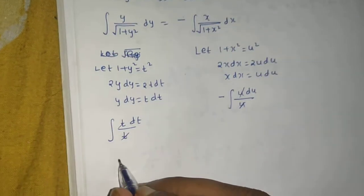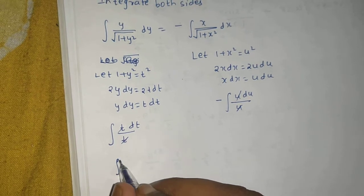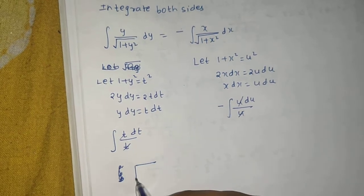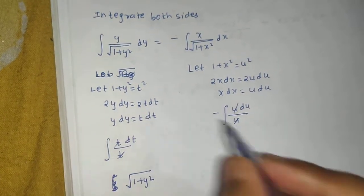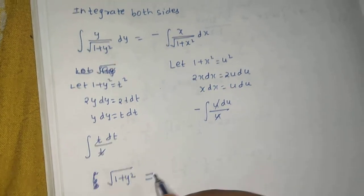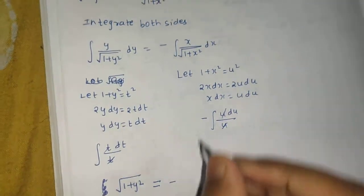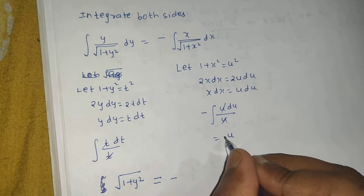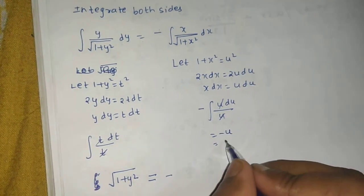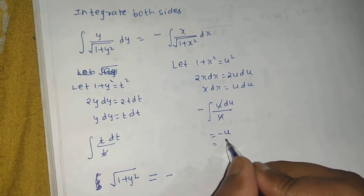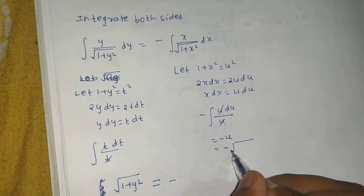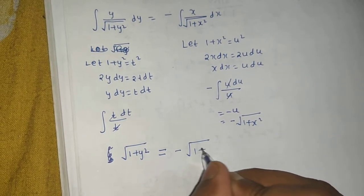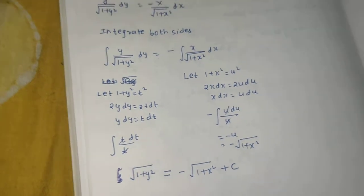The first integral of dt gives t, and since t = √(1+y²), the left side evaluates to √(1+y²). The right-side integral gives minus u, and since u = √(1+x²), it evaluates to minus √(1+x²), plus constant C.